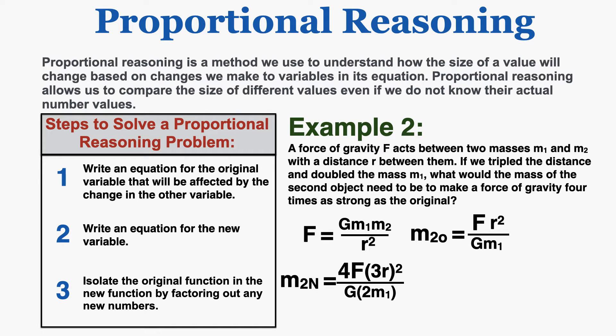Step two says to write an equation for the new variable. The new mass 2 is going to be equal to four times the original force — because that's what the problem says — and the new distance r is going to be three times the original r, so I'll put 3r where r would normally appear, and that's being squared. The original mass 1 is being multiplied by 2 because the problem says that mass doubles. So I get 4f times (3r) squared over G times 2m1.